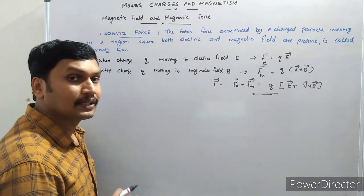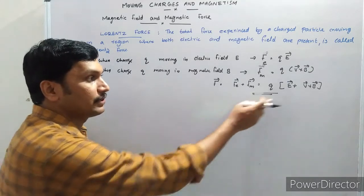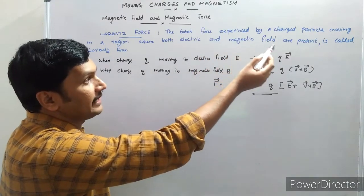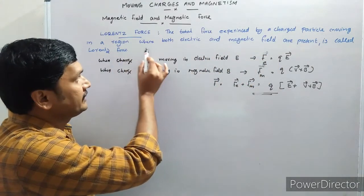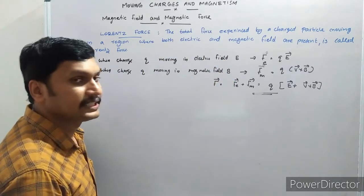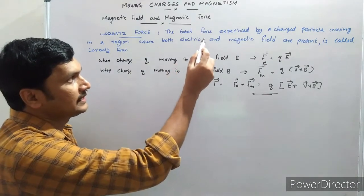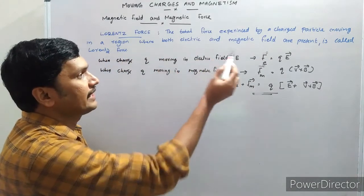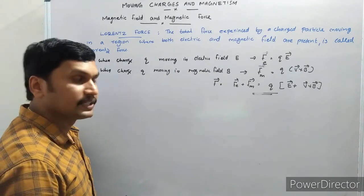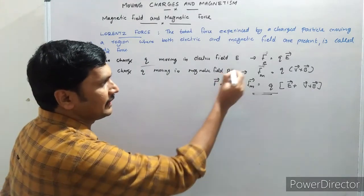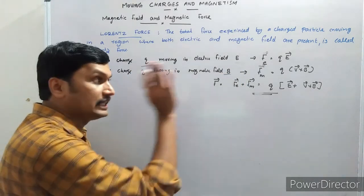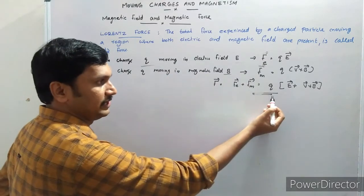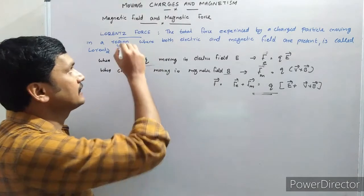The total force F is the vector sum of electric force and magnetic force: F = F_E + F_M = Q(E + V×B). This total force is known as the Lorentz force, and this equation is known as the Lorentz force equation. The Lorentz force is the total force experienced by a charged particle moving in a region where both electric and magnetic fields are present.